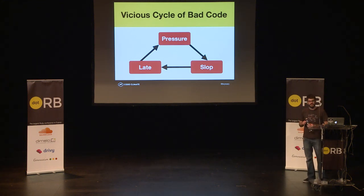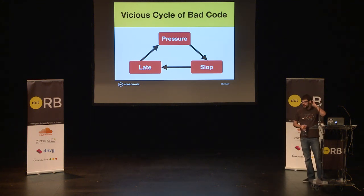Some of you may have felt this on projects you've been on, or even the projects you're on right now. So what's going on? Why does code quality have this vicious cycle? Generally, there are a lot of opposing forces to producing good quality code.